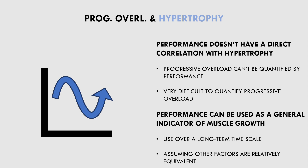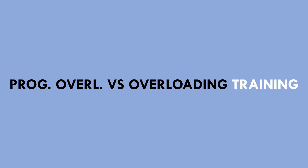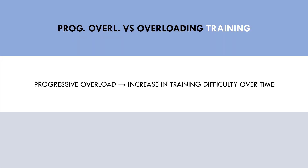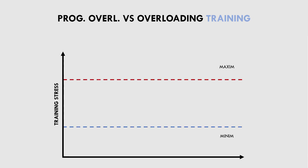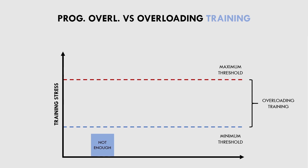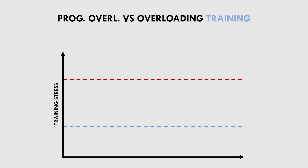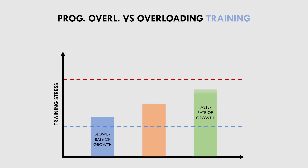We also need to establish the concept of overloading training and how this differs from progressive overload. Progressive overload refers to a gradual increase in training difficulty over time. Overloading training, however, refers to the threshold required for adaptation to occur. Basically, there is a minimum and maximum threshold of training that can be considered overloading — if we train within these thresholds, it is sufficient for adaptation; too little stress won't induce adaptation, and too much may prevent recovery. There is a large range of overloading training, meaning hypertrophy can be achieved anywhere within this range, though the magnitude of stress provided will determine the rate of adaptation.